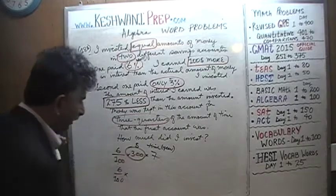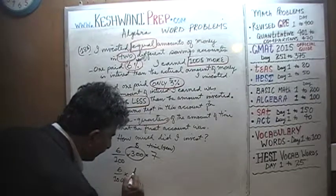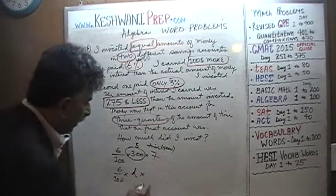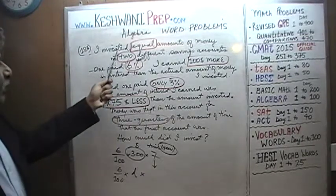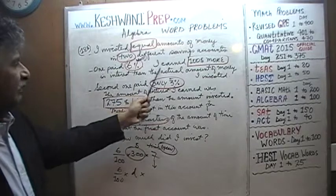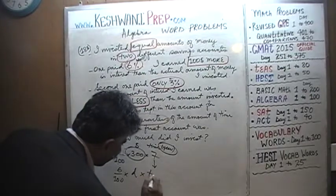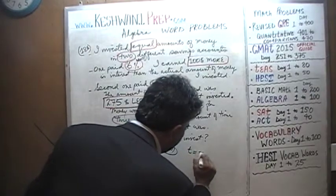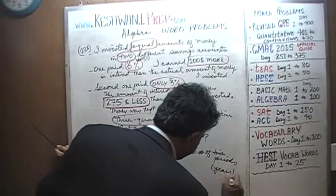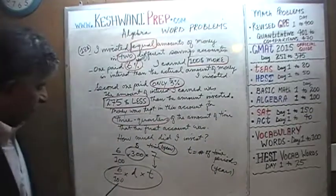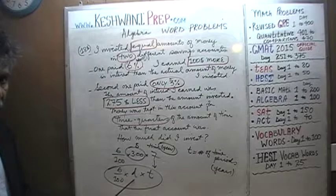What we don't know is the amount we are investing — let's call it D for dollar. We also don't know for how many time periods, expressed in years — let's call it T. So T represents the number of time periods expressed in years. This is how we'll arrive at the amount of interest earned in the first account: 6 over 100 times D times T.